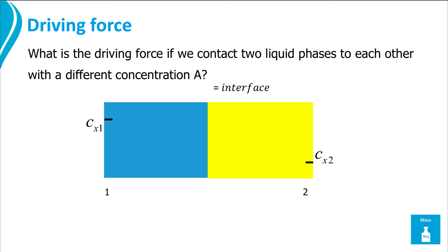In the second situation there is an interface, and the component x will be distributed over both phases. You see that at the interface there is a jump in concentration.